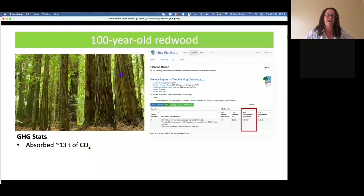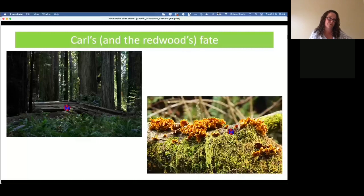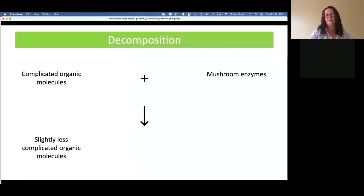The problem is that the carboniferous era is no longer with us, so Carl's fate and the redwood's fate are no longer what they were 300 million years ago. Now when that tree falls over in the forest, it doesn't just lie there and get buried and turned into coal. In fact, there will never be coal again. Now we have decomposers and they're extremely efficient, of which the fungi mushrooms are perhaps the most important. When the mushrooms get to work on that tree, they take complicated organic molecules, add their mushroom enzymes, and out of that we get slightly less complicated organic molecules and CO2 again. Carl is once again transformed into CO2.